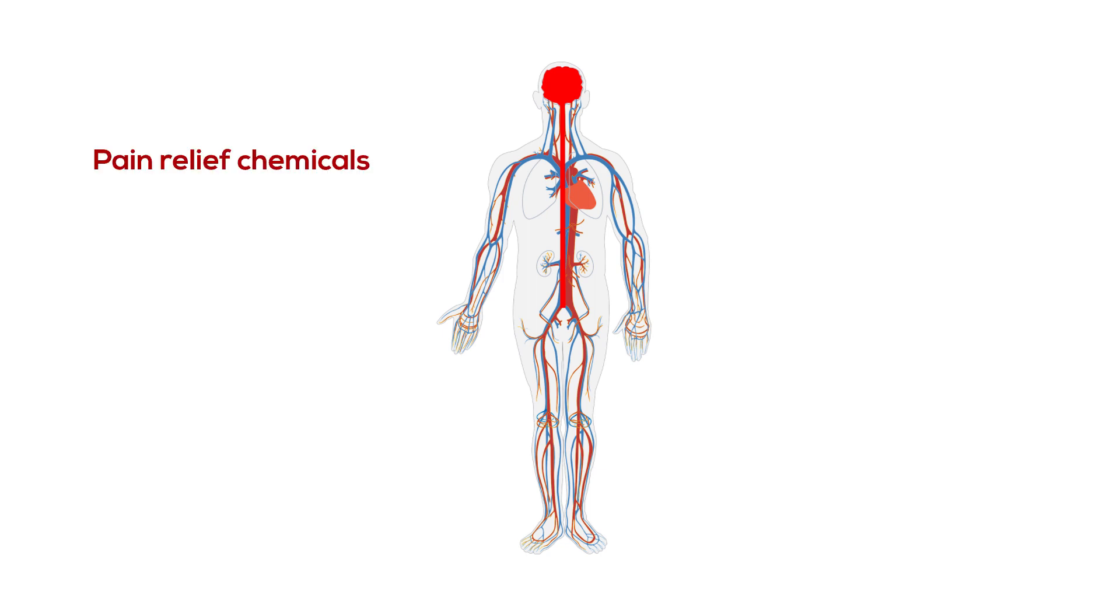Consequently, the brain produces pain relief chemicals to help control the pain. One of these chemicals is serotonin, which retriggers the itch signal again, making it even itchier. So you will have to scratch again, but this time you'll scratch even harder to counteract this new level of itch.